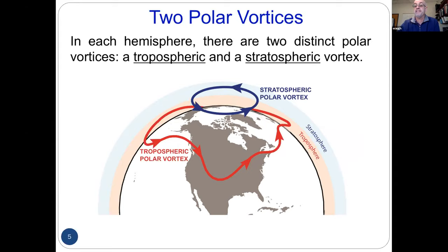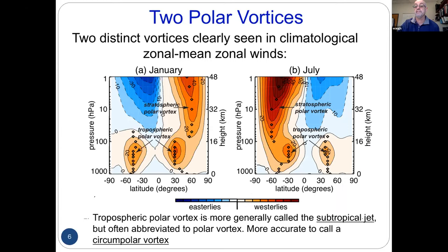The stratospheric vortex is in the stratosphere. Schematics show it is typically smaller and less disturbed, whereas the tropospheric vortex is a kind of broader scale.